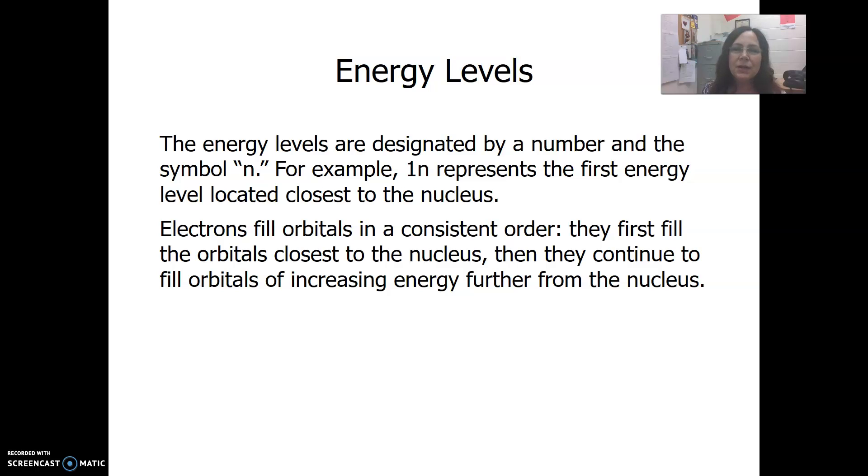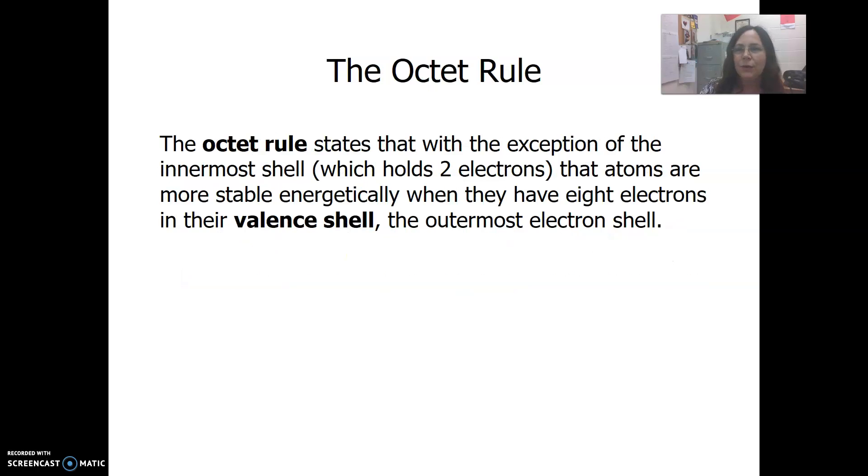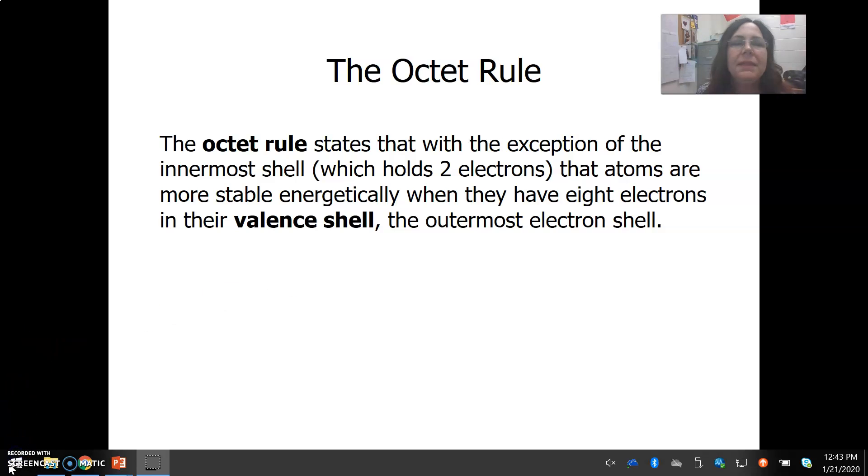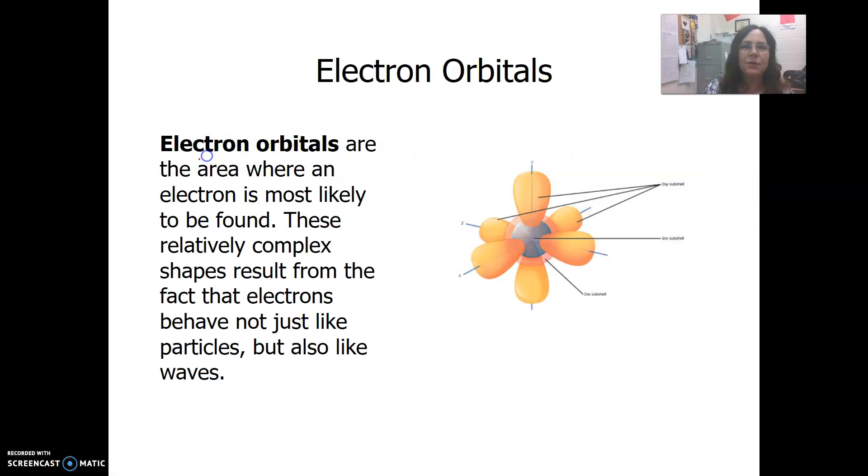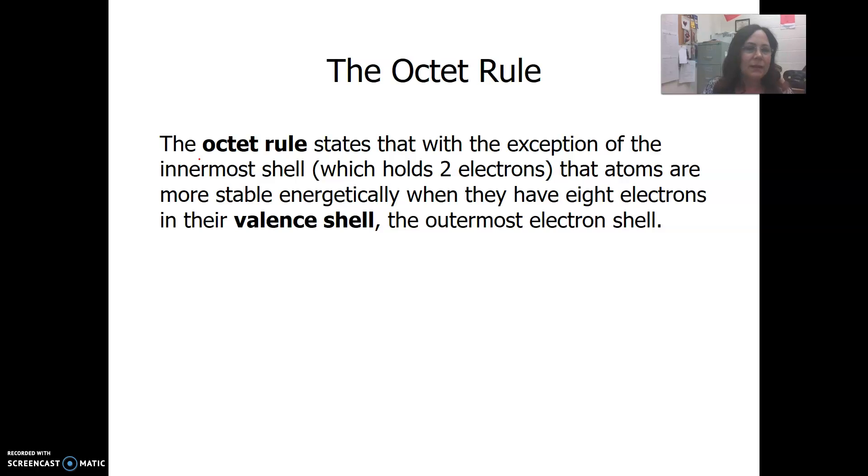Some atoms have up to five to seven energy levels because they have so many electrons. Electrons are going to fill the orbitals or energy levels starting with the one closest to the nucleus and then moving further away. The octet rule, octet meaning eight, states that except for the innermost shell. Sorry, our time's running out. I'll come back to this in the next.